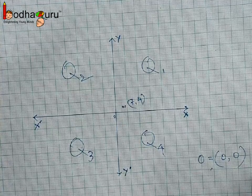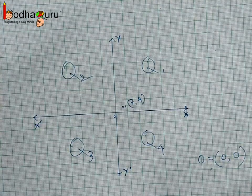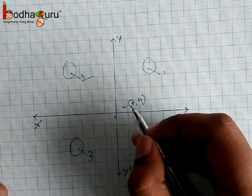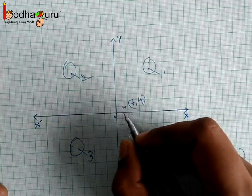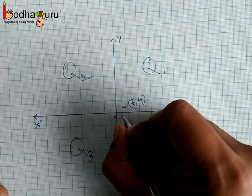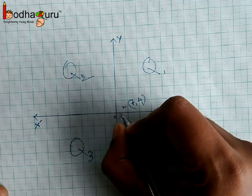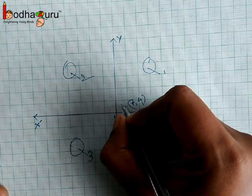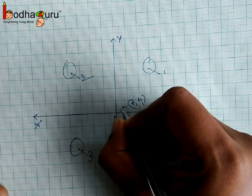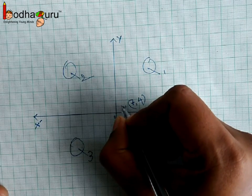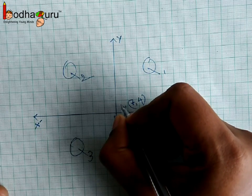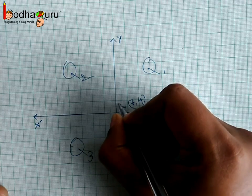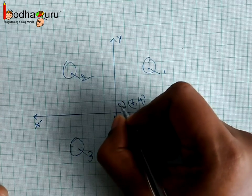The signs of the coordinates of a point depend on which quadrant that point is in. If we take any point in quadrant 1, x is positive as it is to the right of the y-axis, and y is also positive as it is above the x-axis.